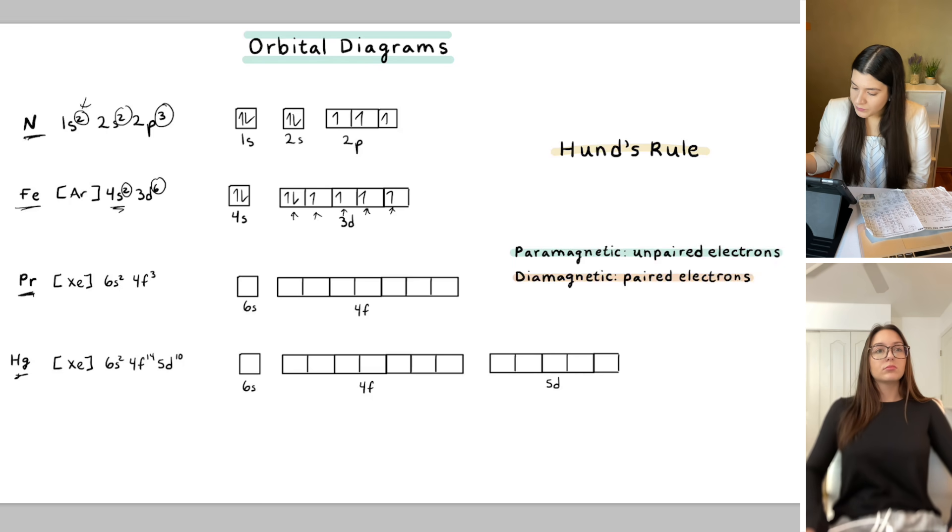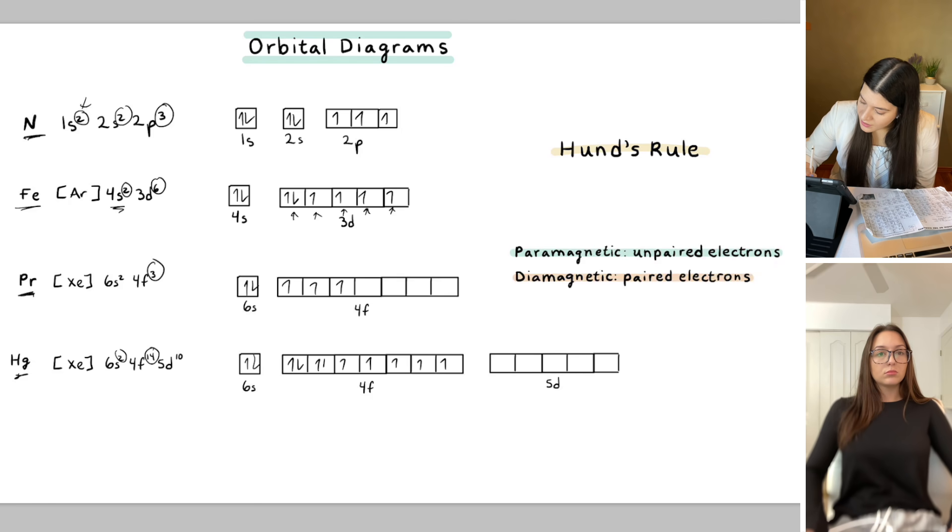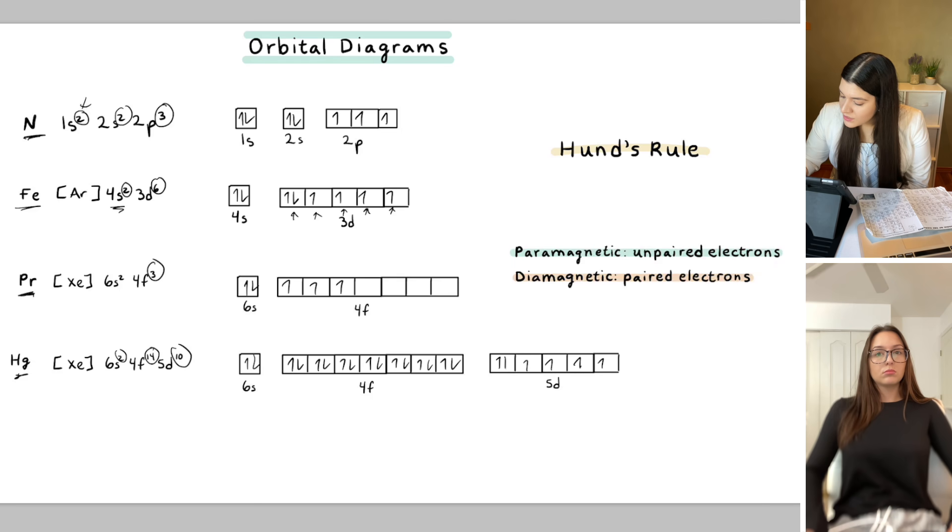Same thing goes for this one. For Pr, this would have been, this is full, the 3s, each individual one, and that's it. And then same thing goes for Mercury. There's two here, 14 here. So how we would fill this would just be one, two, three, four, five, six, seven, come back around eight, nine, 10, 11, 12, 13, 14. And then this is completely full as well. So once again, just showing Hund's rule, this is one, two, three, four, five, come back around six, seven, eight, nine, 10.